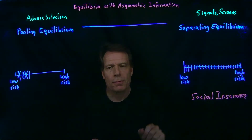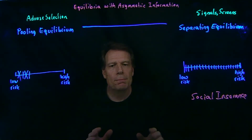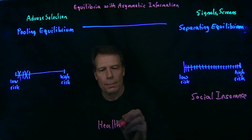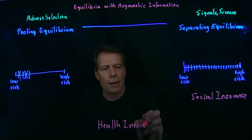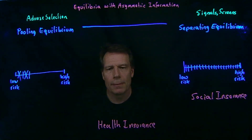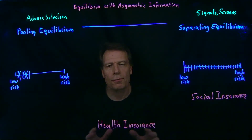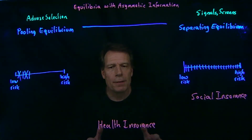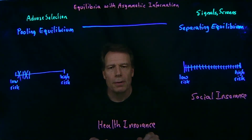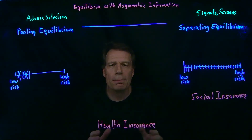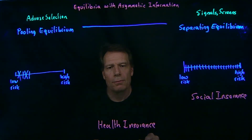The social insurance motive for offering insurance is particularly strong in the case of health insurance. We're going to spend a lot of time talking about health insurance markets and the kinds of difficulties those markets run into. One reason people think we should have health insurance for everybody is that many people believe you have a right to health insurance — a social insurance motive for making sure everybody has access. Not everybody agrees, but many people hold that view.